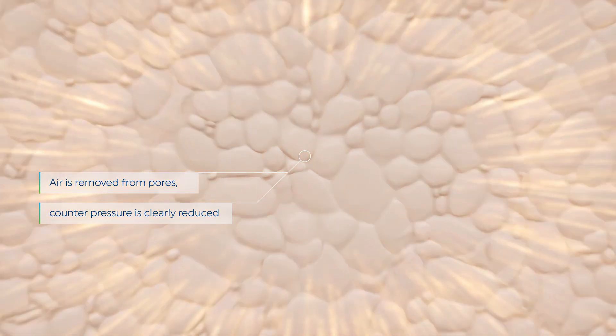This pressure generates an opposing force to the sintering process. When conducting the sintering process under vacuum, the air is removed from the pores and the counter pressure is clearly reduced for easier, faster sintering densification.